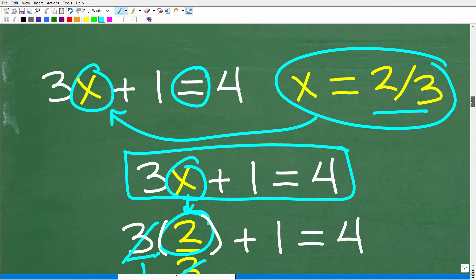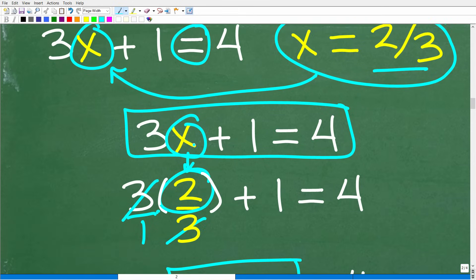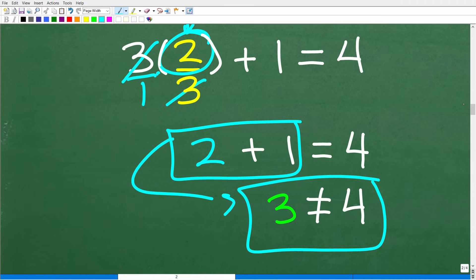So this number, this value that we plugged in two thirds to replace this x cannot be the solution. Now, by definition, the solution to an equation is the value such that when you plug it back in, it balances out the equation, the left hand side and the right hand side.